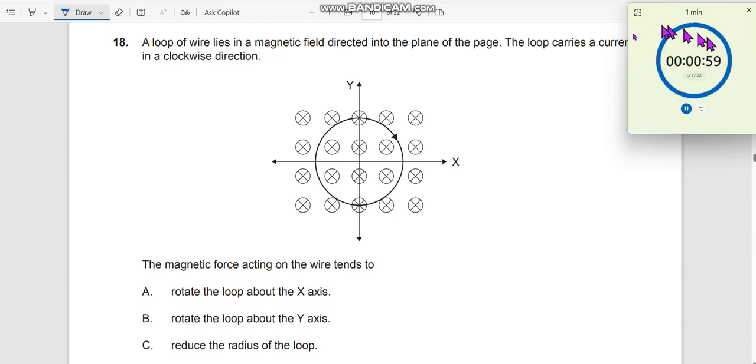Question number 18. A loop of wire lies in a magnetic field. There is a loop of wire over here which is lying in the magnetic field directed into the plane of the page.